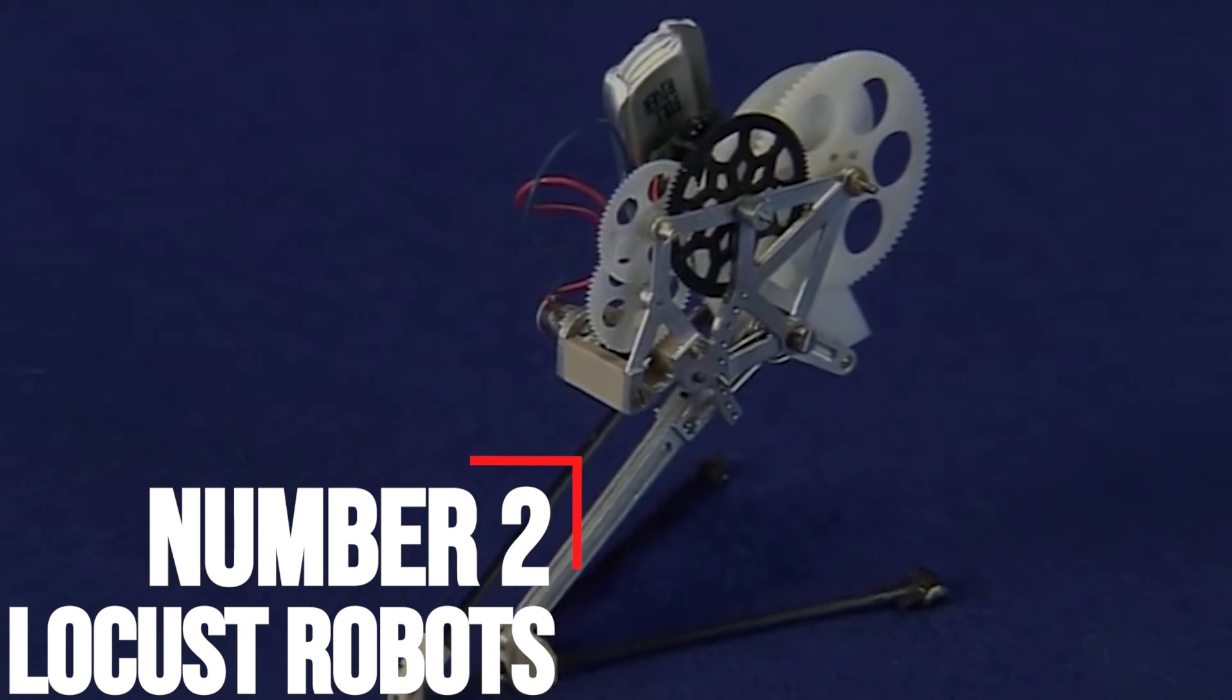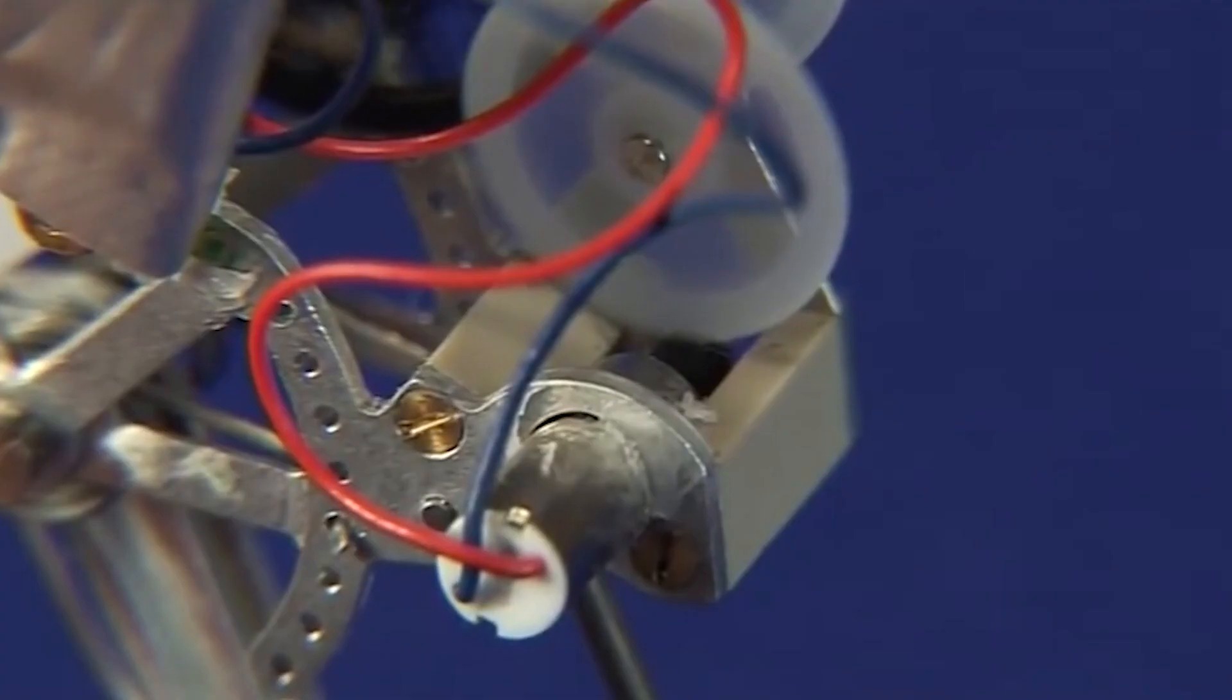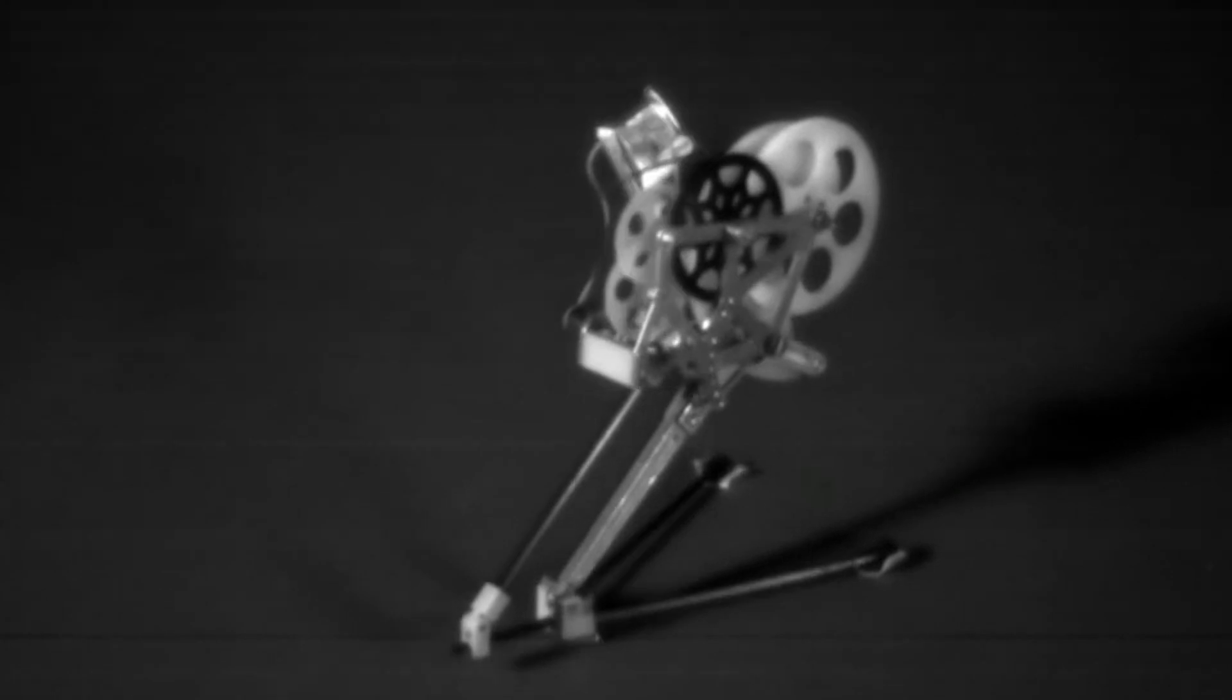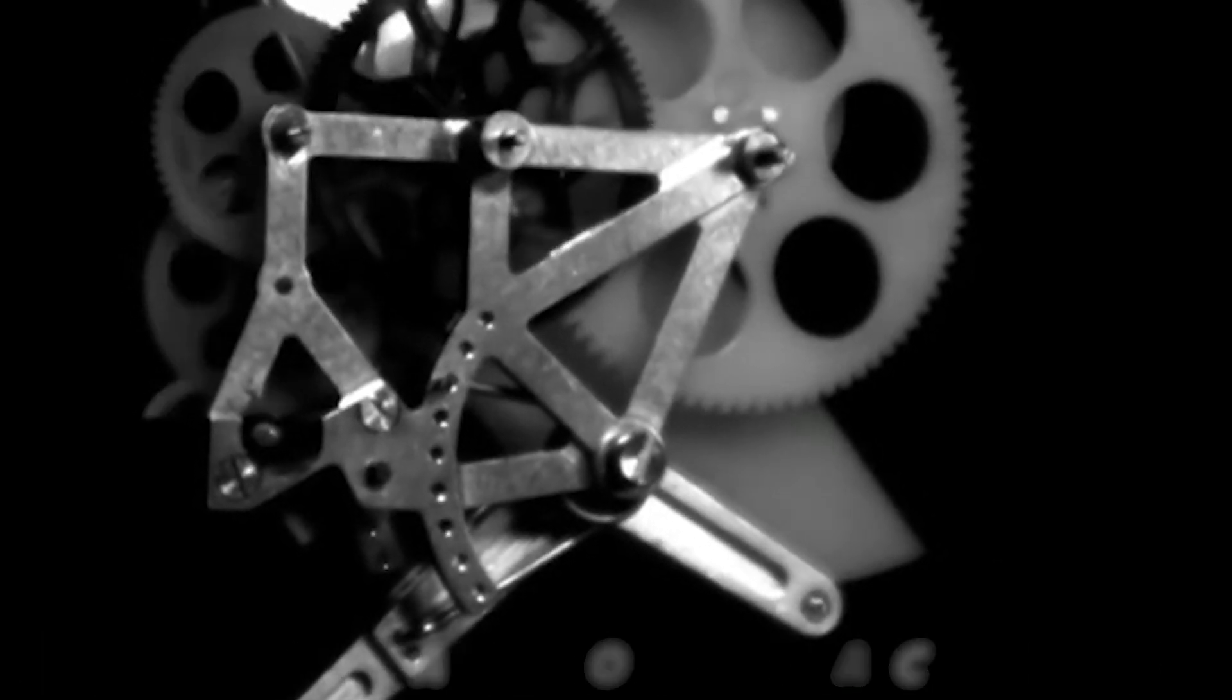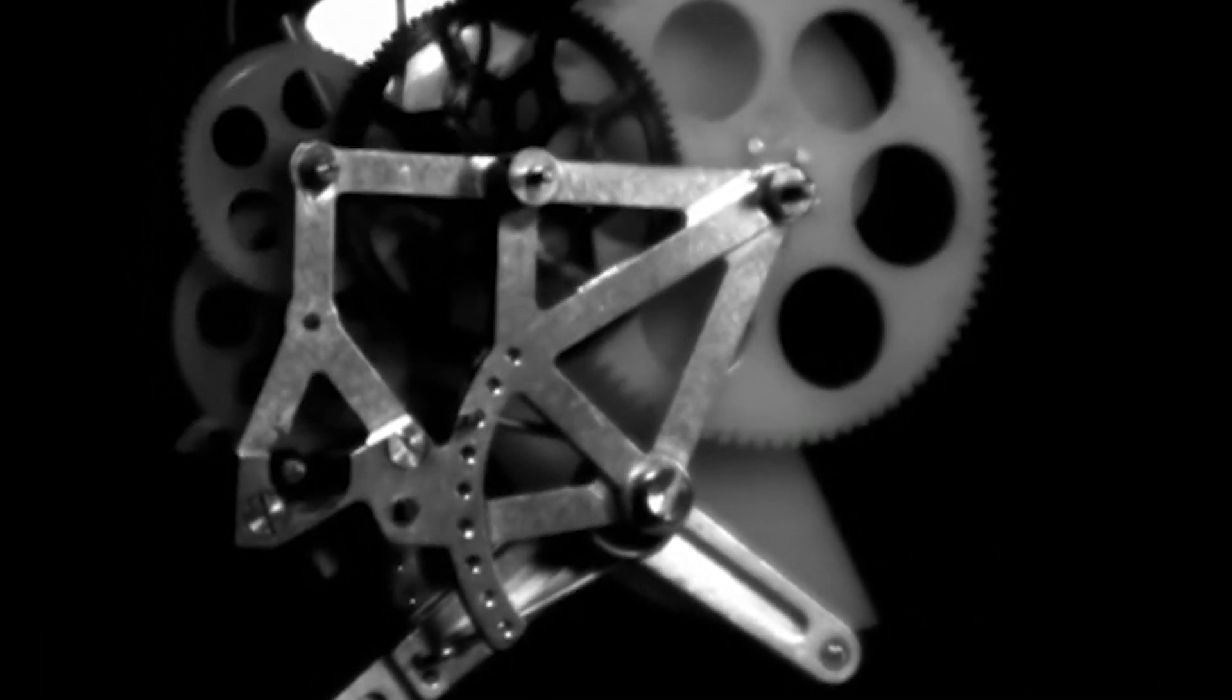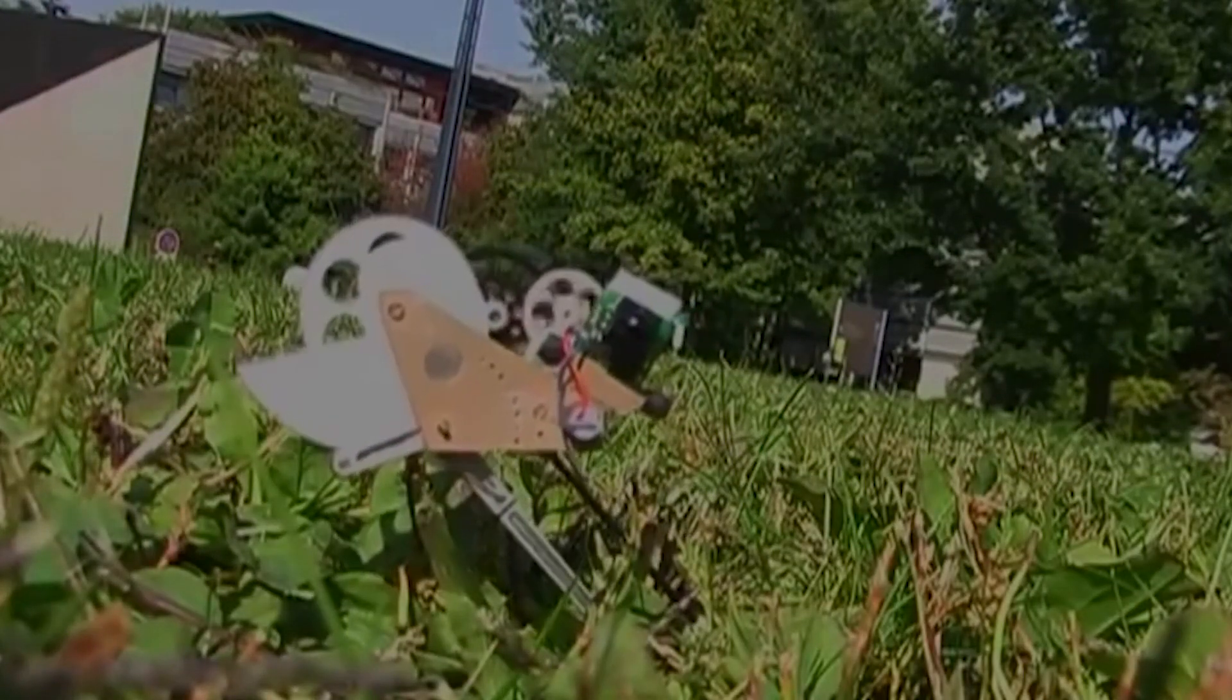Number two, locust robots. When is a plague of locusts a good thing? When it's comprised of tiny, high-jumping robots. Locusts were the animal inspiration for a team of zoologists and mechanical engineers who have invented a robot that can jump 11 feet and cover a horizontal distance of 4.5 feet, all in one leap. The robot doesn't look like a locust, but its design is based on the biomechanical features of a locust's three-stage jump mechanism.